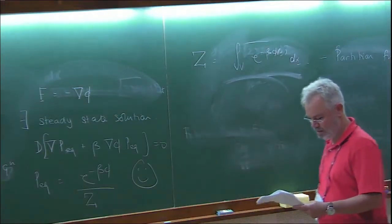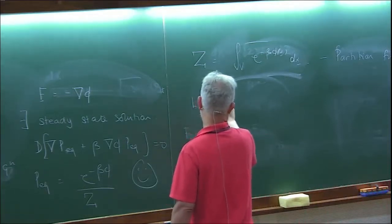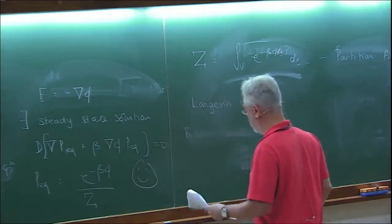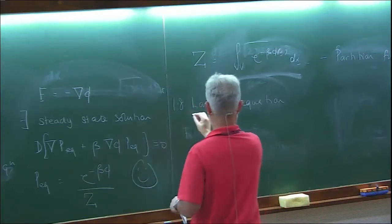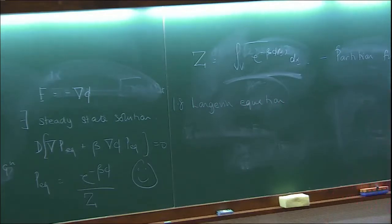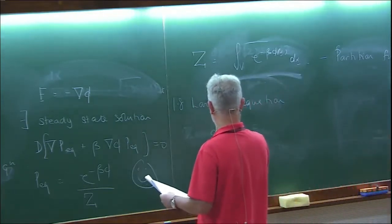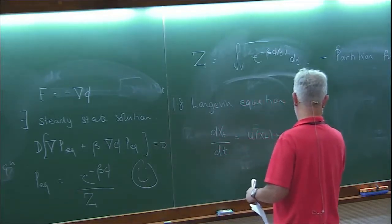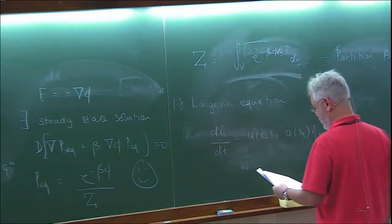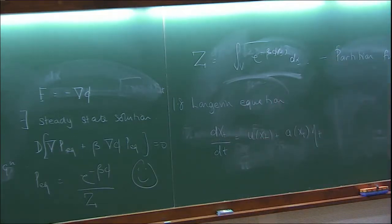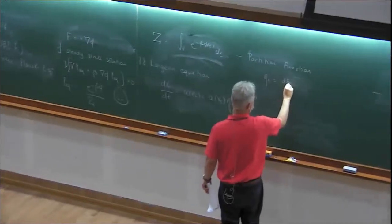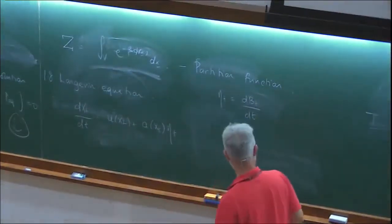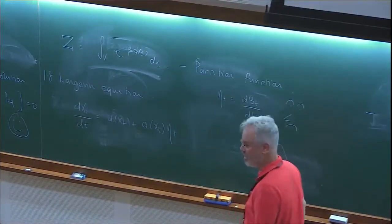The last thing to discuss is the Langevin equation. I take my stochastic differential equation and divide by dt — which we said one shouldn't do — writing dx/dt = u(x(t)) + a(x(t)) eta(t). This eta(t) = dB/dt is known in the physics literature as white noise. Its average value is zero, since dB averages to zero in the continuum limit.